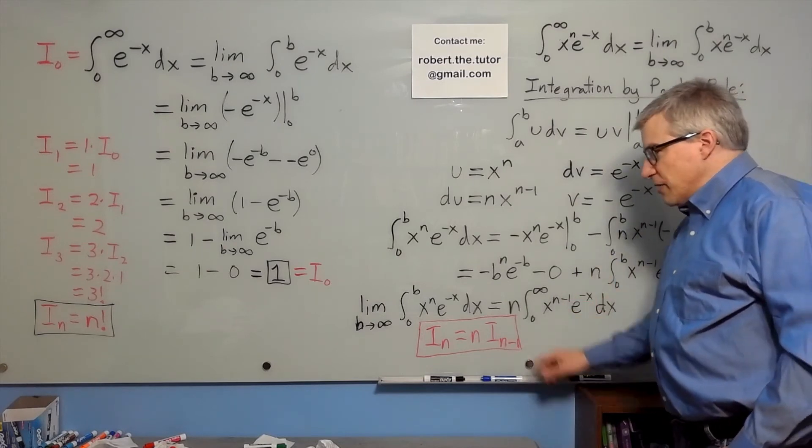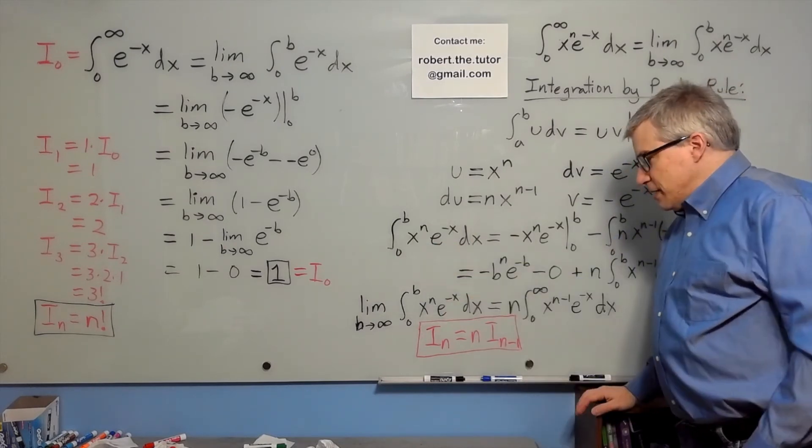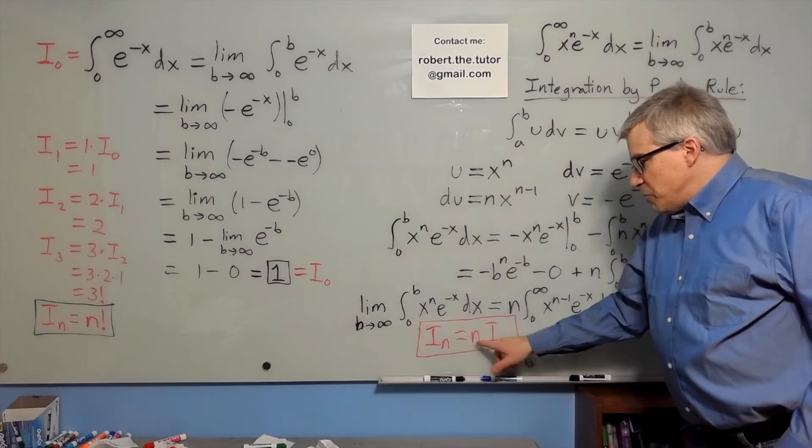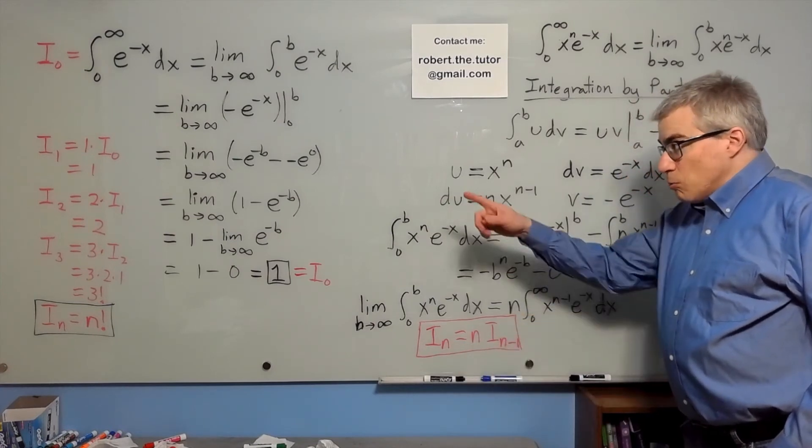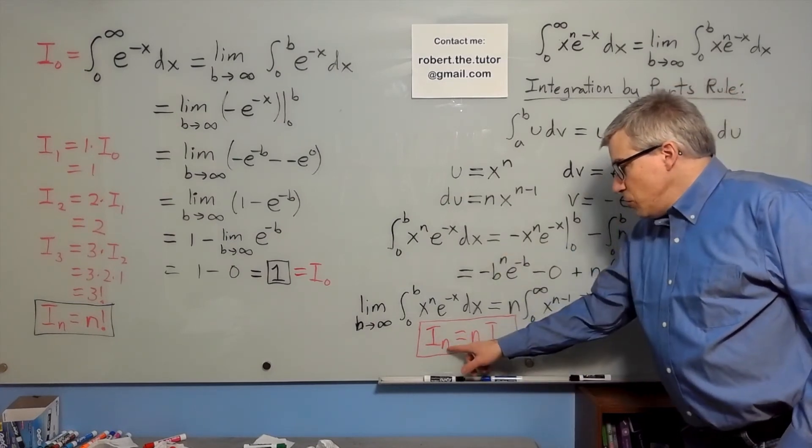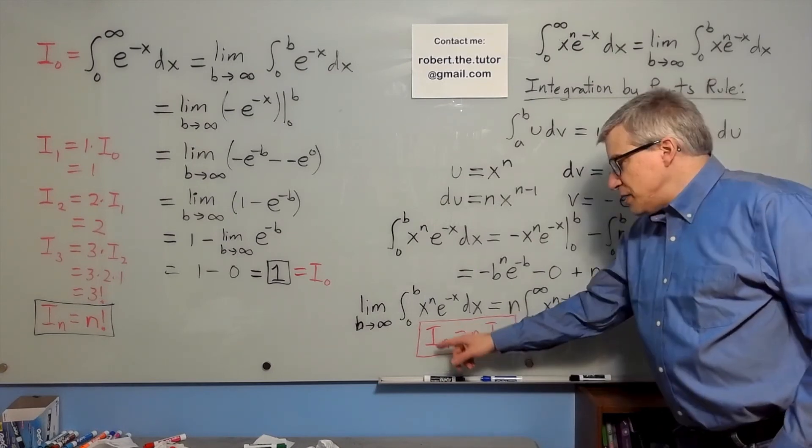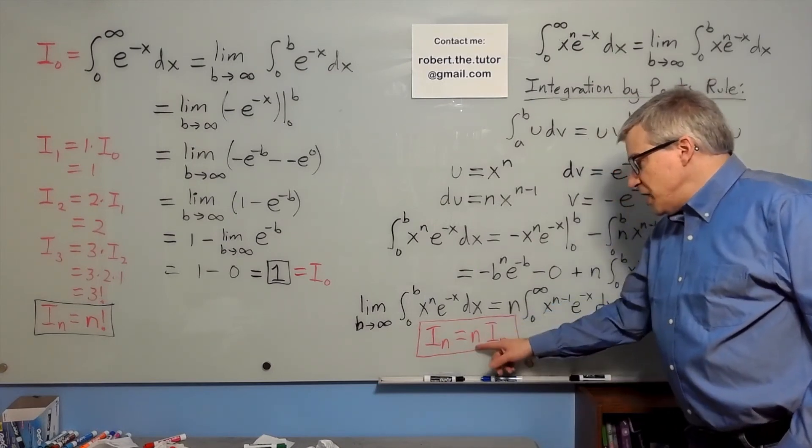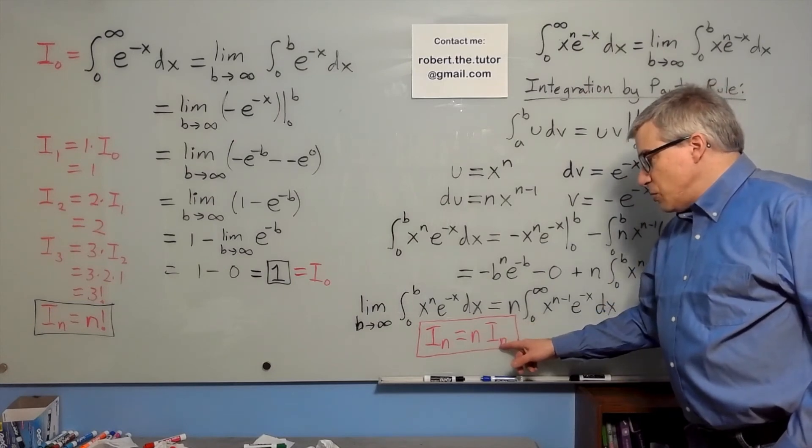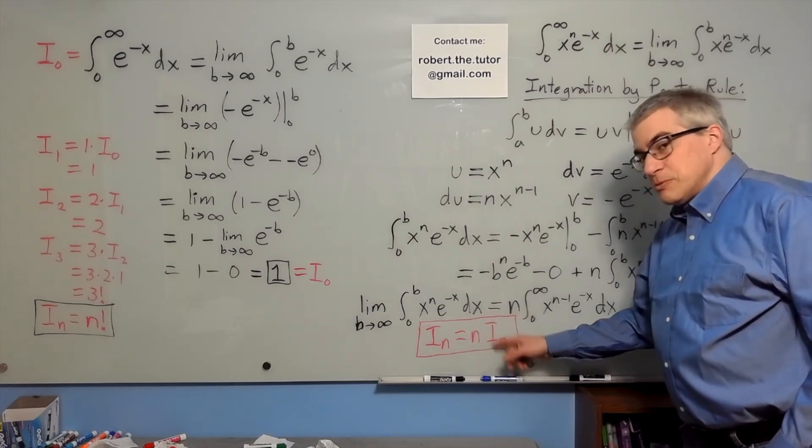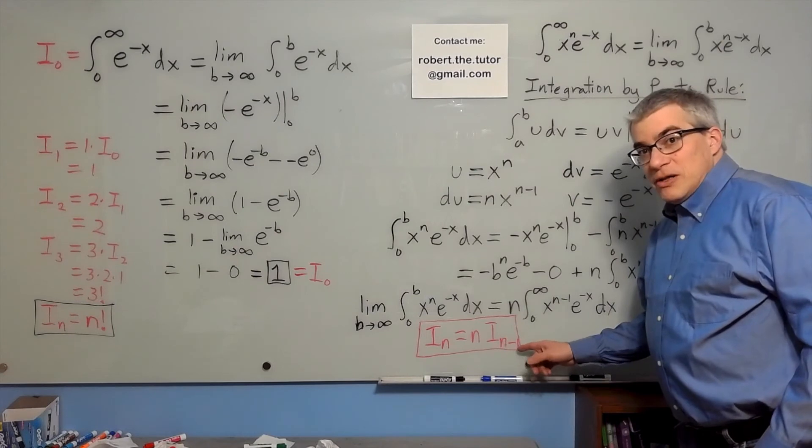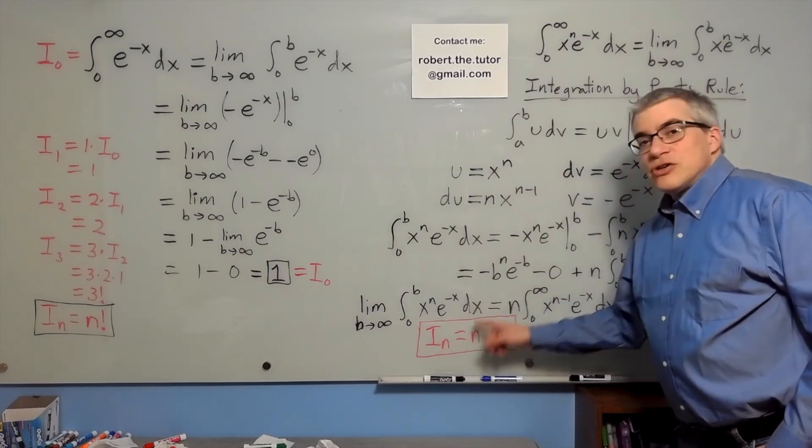Okay let's put those together. If integral zero is one, then integral one will be one times integral zero, or one. Integral two will be two times integral one, or two times one. Integral three will be three times integral two, which is two times one, so three times two times one, or three factorial. Integral n is actually n factorial.